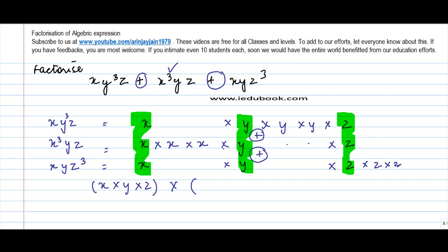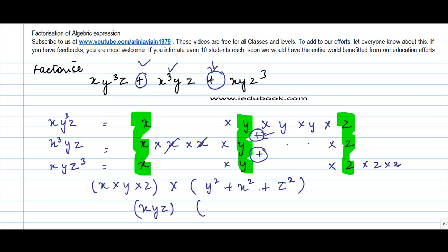Whatever are the common factors, just like I was doing earlier, I put them out into a separate bracket. So the first term leaves y·y, which I write as y². The sign is plus. Then x·x, which I write as x². And plus z². So the final factored form is x·y·z into (y² + x² + z²).